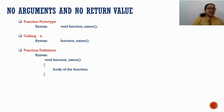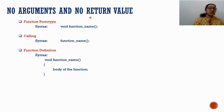Now let's check the syntax and examples for each category. The first category is no arguments and no return value. For the function prototype syntax: void, then function name, then empty brackets, then semicolon. Void means there is no return value, so the return type is void. Empty brackets mean there is no argument. The semicolon is compulsory for the function prototype. For example: void sum(); — void means there is no return from that function.